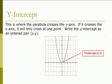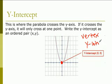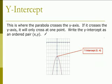The next term is y-intercept, and the y-intercept is where the parabola crosses the y-axis. If it crosses the y-axis, it will only cross at one point. Write the y-intercept as an ordered pair. In this case, it crosses the y-axis at (0, 0), which is also the vertex. In another example, it crosses the y-axis at (0, negative 4), which is the ordered pair of that y-intercept.